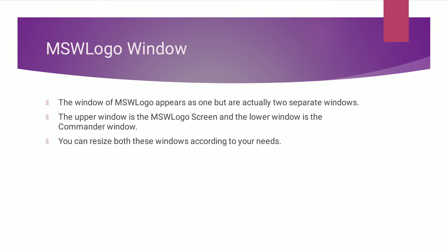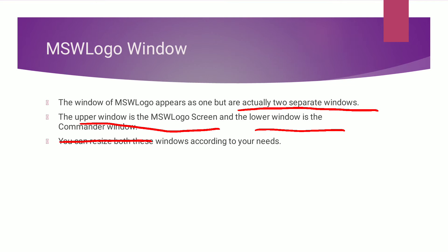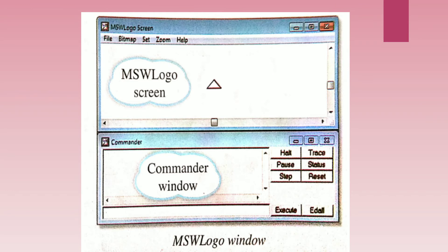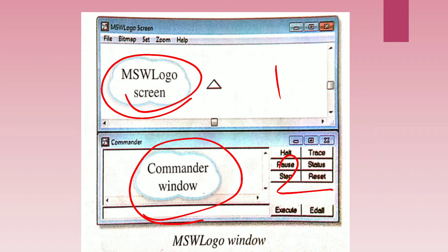The window of MSW Logo appears as one but is actually two separate windows. The upper window is known as the MSW Logo screen, and the lower window is known as the commander window. You can resize both windows as needed. This is the complete window of MSW Logo — the upper part is the MSW Logo screen and the lower part is the commander window.